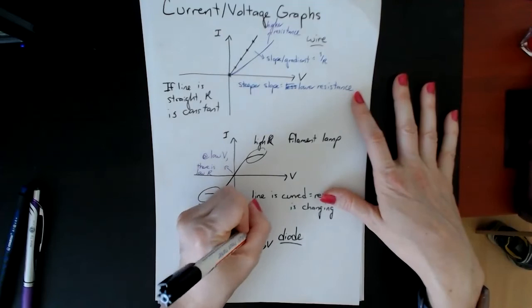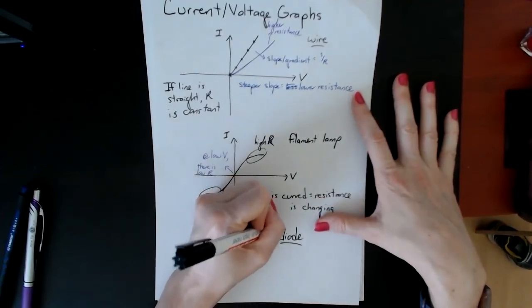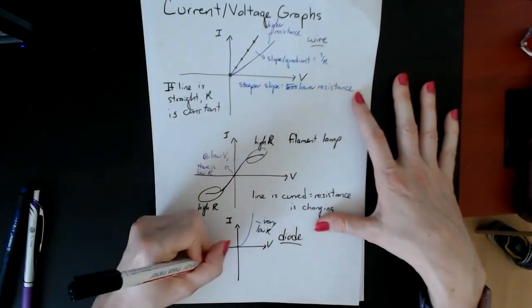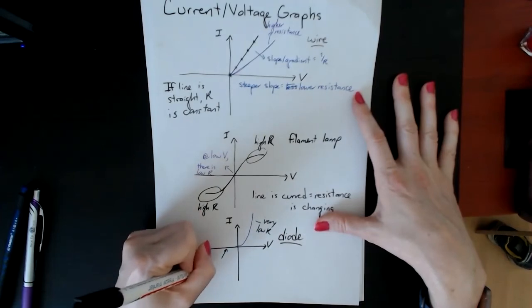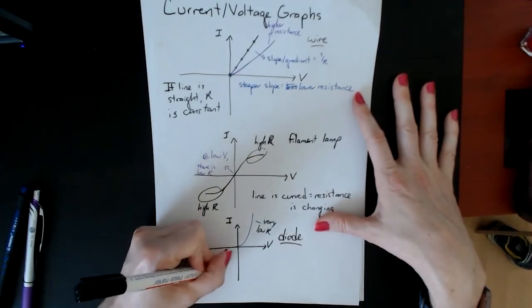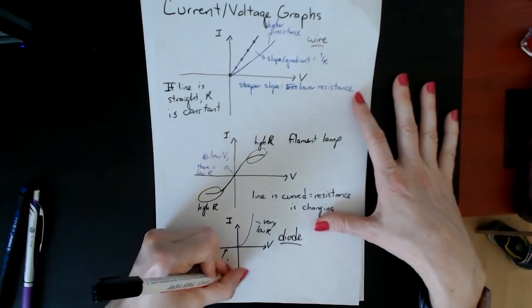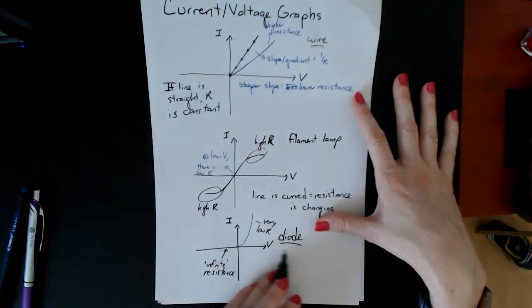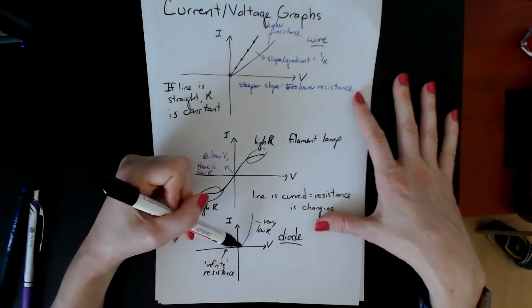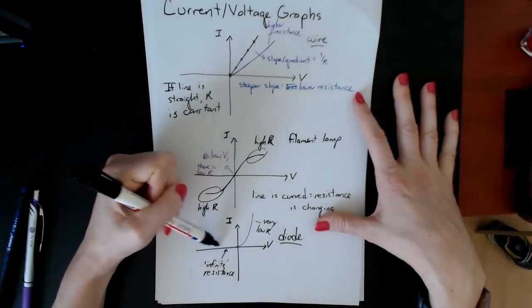But if you try to make it go the other way, there's basically infinite resistance. This has very low resistance, and this has—you can call it very high—but it's basically infinite resistance. That's what diodes do: they allow current to only flow in one direction. It can only flow here, but can't flow on the other side.